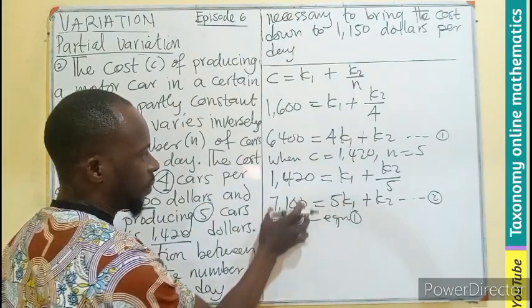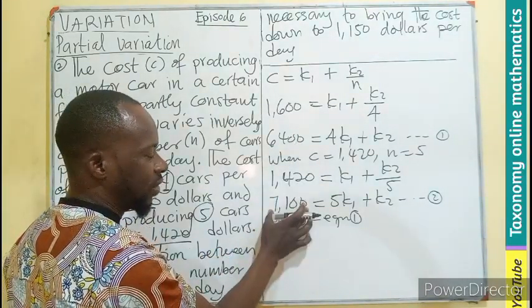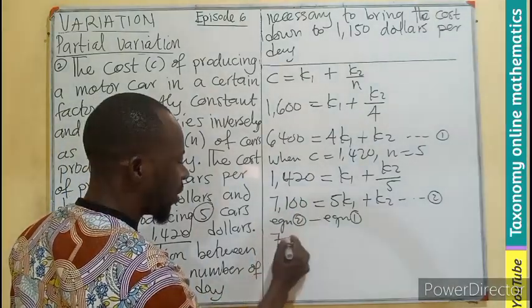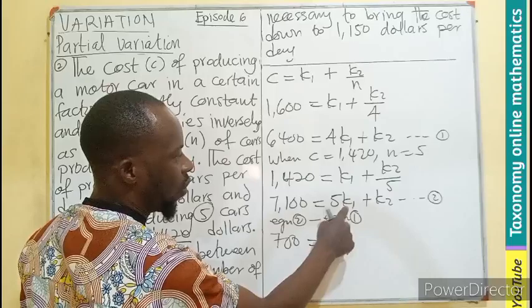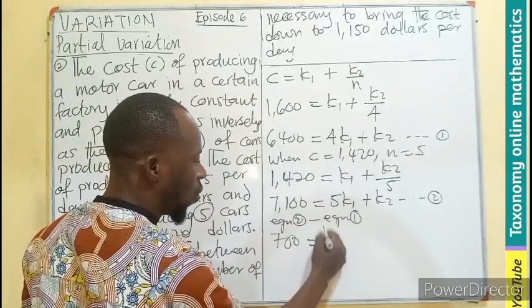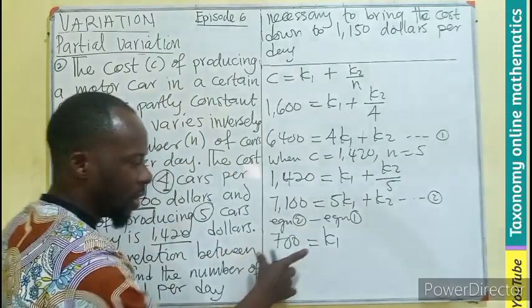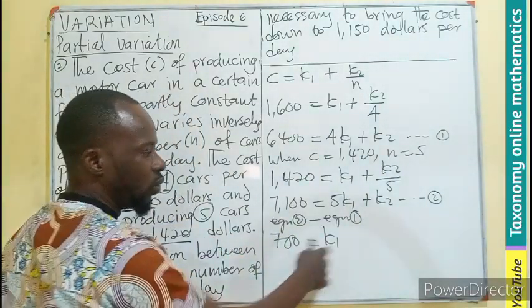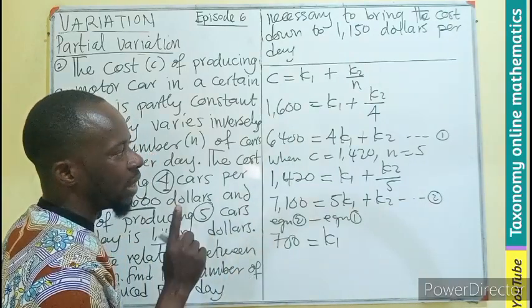If we subtract 6,400 from 7,100, you will be left with 700. That will equal 5K1 minus 4K1, giving us only K1. K2 minus K2 will be 0. Meaning the value of K1 is known, which we can substitute into any of the equations to get K2.